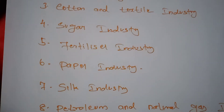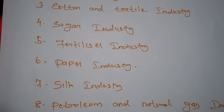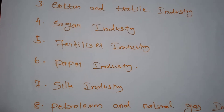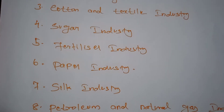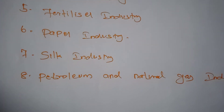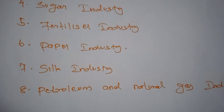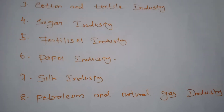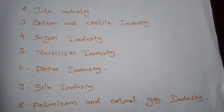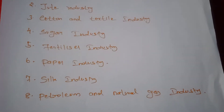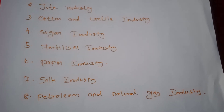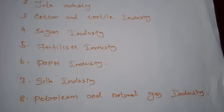The first mechanized paper mill was set up in 1812 at Serampore in West Bengal. Additionally, silk industries, petroleum, and natural gas industries are also among the large-scale industries. These are mentioned in our textbook and do not require elaborate explanation.